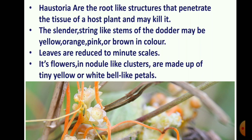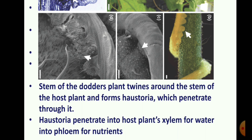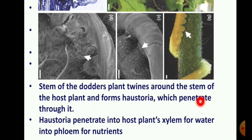The stem of the dodder plant twines around the stem of the host plant and forms haustoria, which penetrate through it. The stem is slender and string-like. The haustoria produced are used to penetrate host plant tissues.